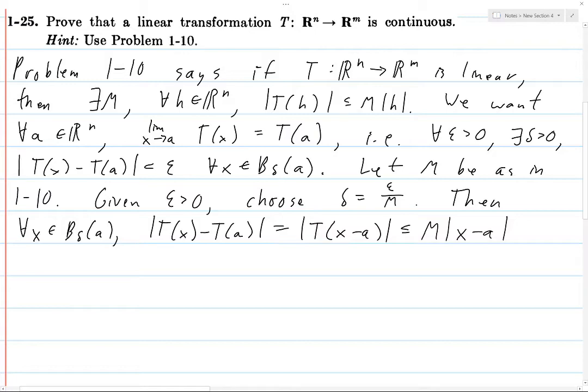So this is going to be less than or equal to M times the norm of x minus A. But x is in a ball of radius delta around A, which means that the distance between x and A must be less than delta. So this is less than M times delta. But delta is equal to epsilon over M, so it's M times epsilon over M, which gives us epsilon.